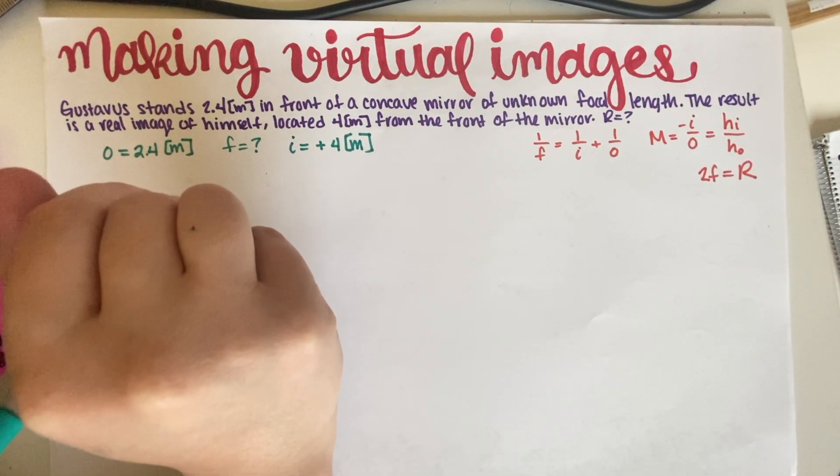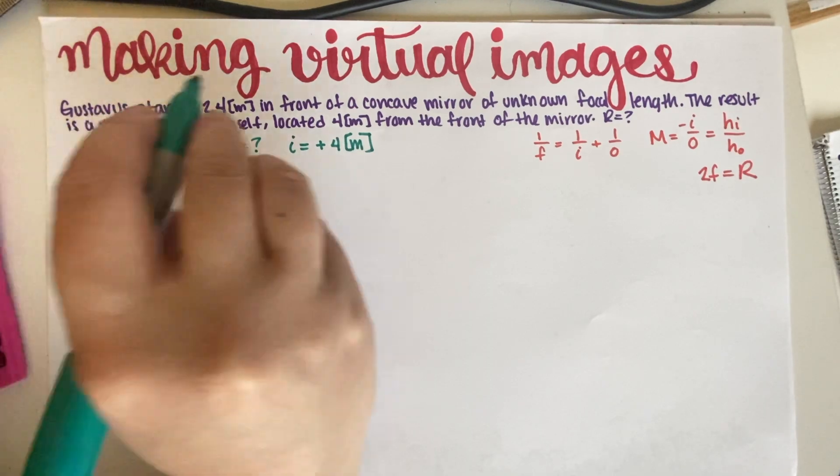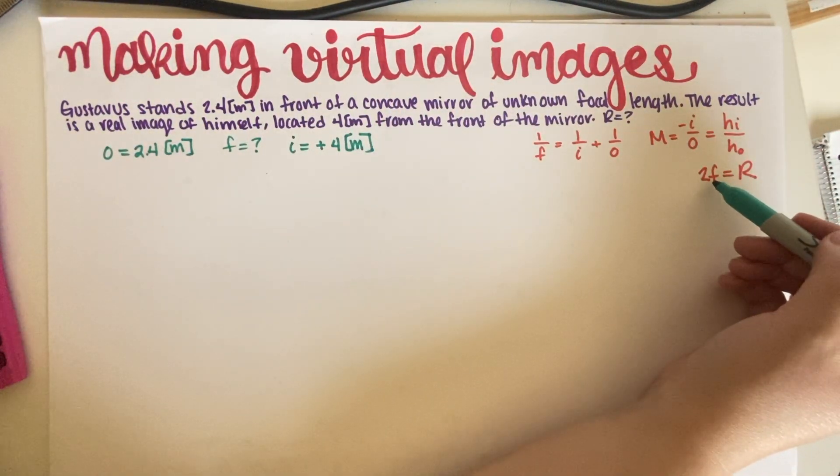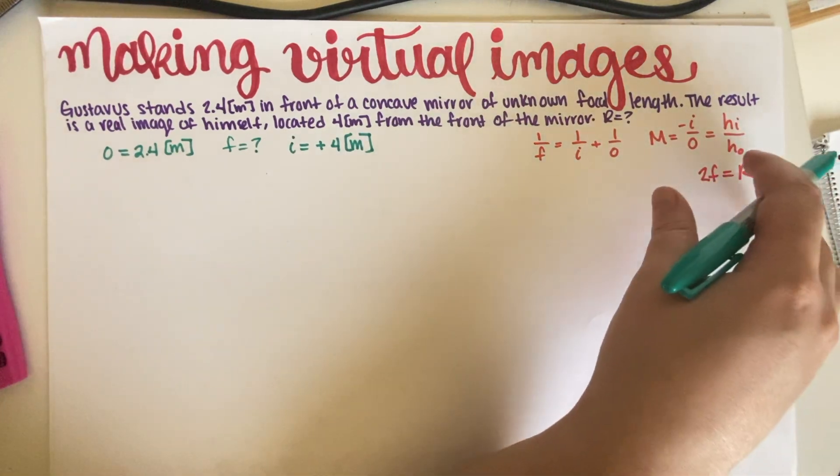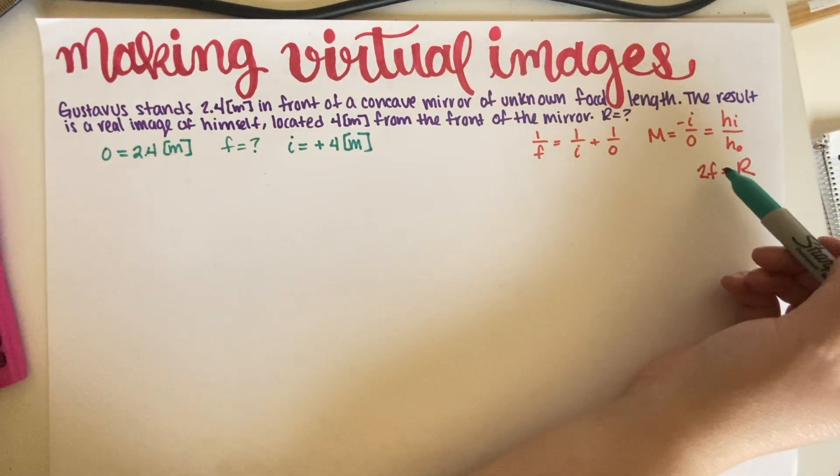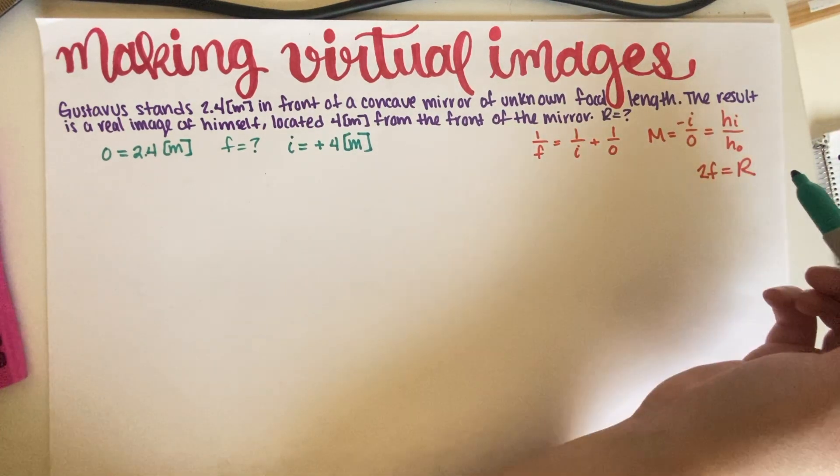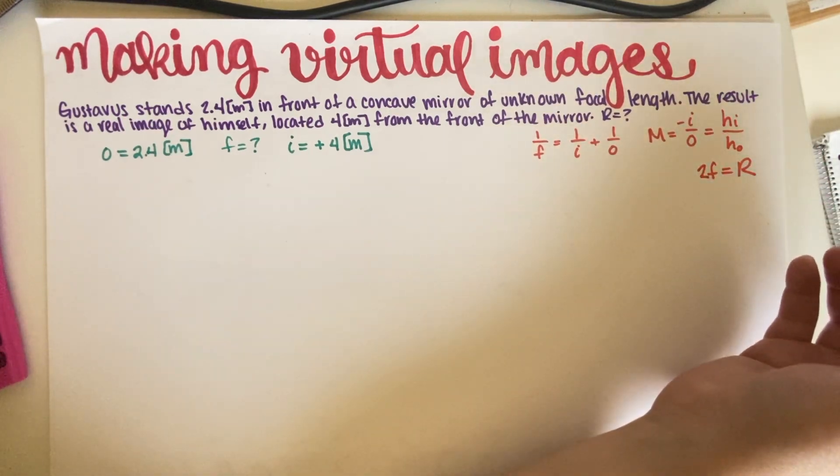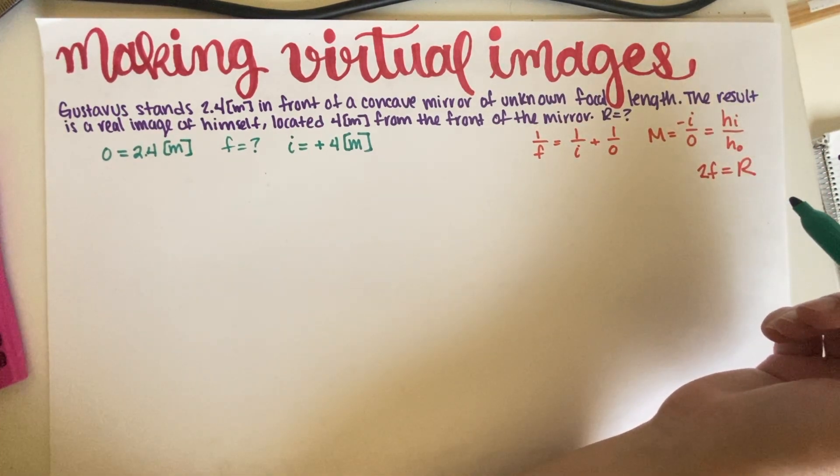Well, let's see. R is just 2 times F, just by using this equation. This relationship holds for all circular mirrors, which is 2 focal points is equal to the radius of curvature of the mirror. So if I can find F, then all I have to do is multiply by 2, and that's it.